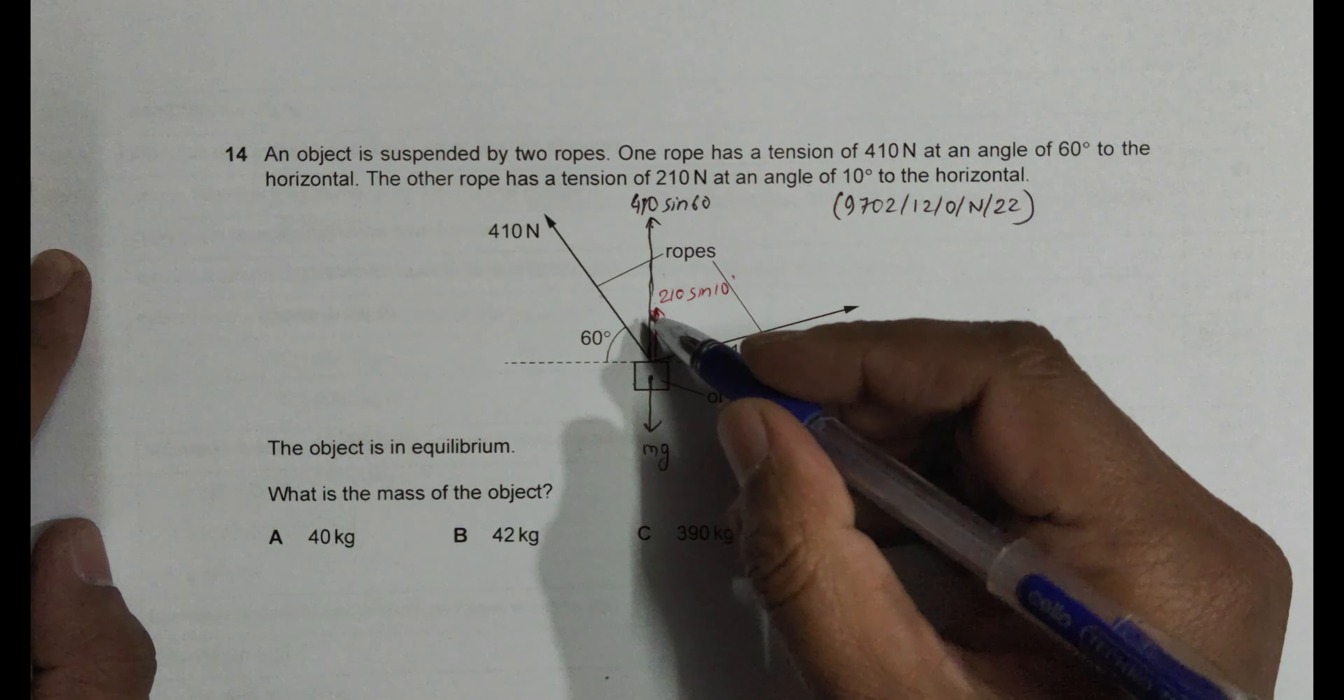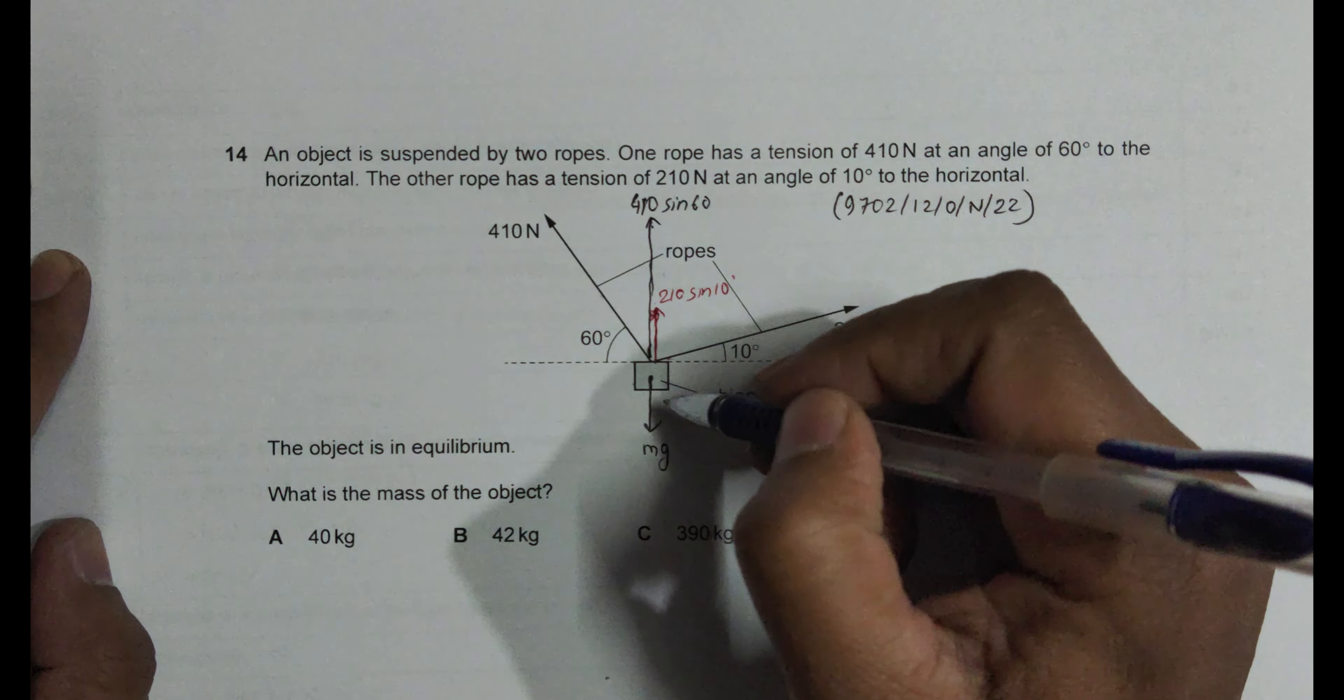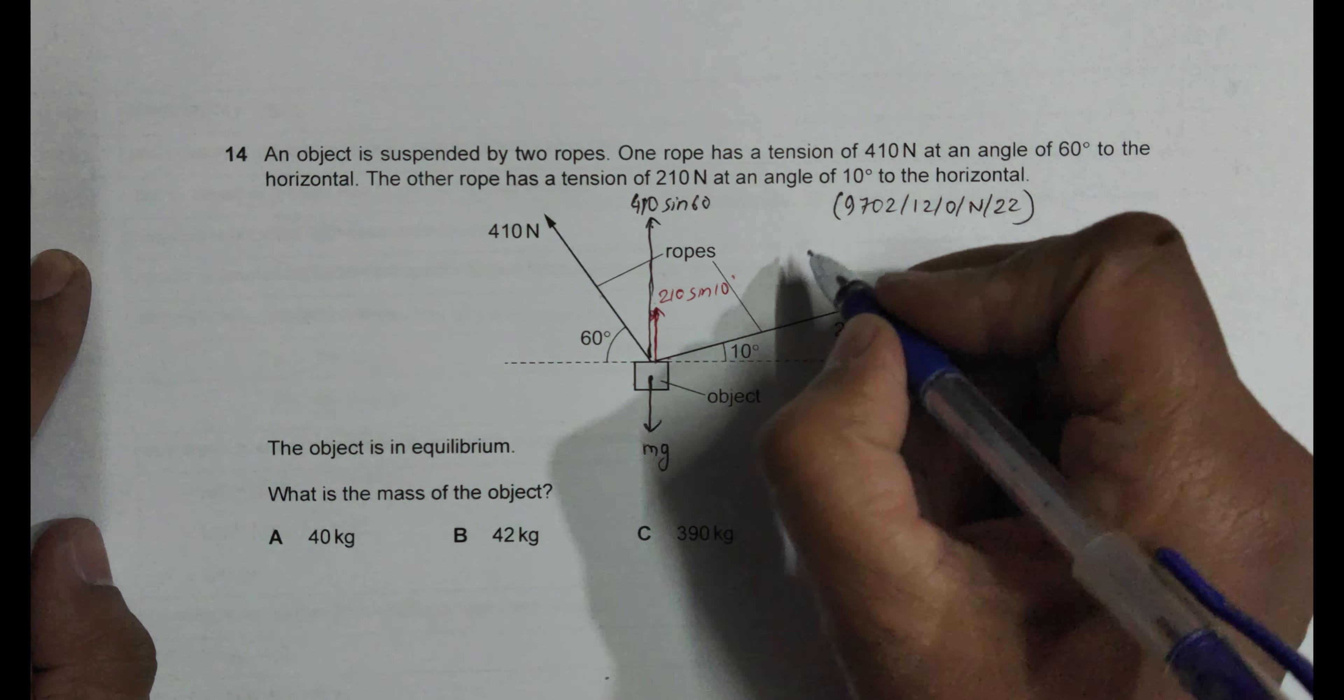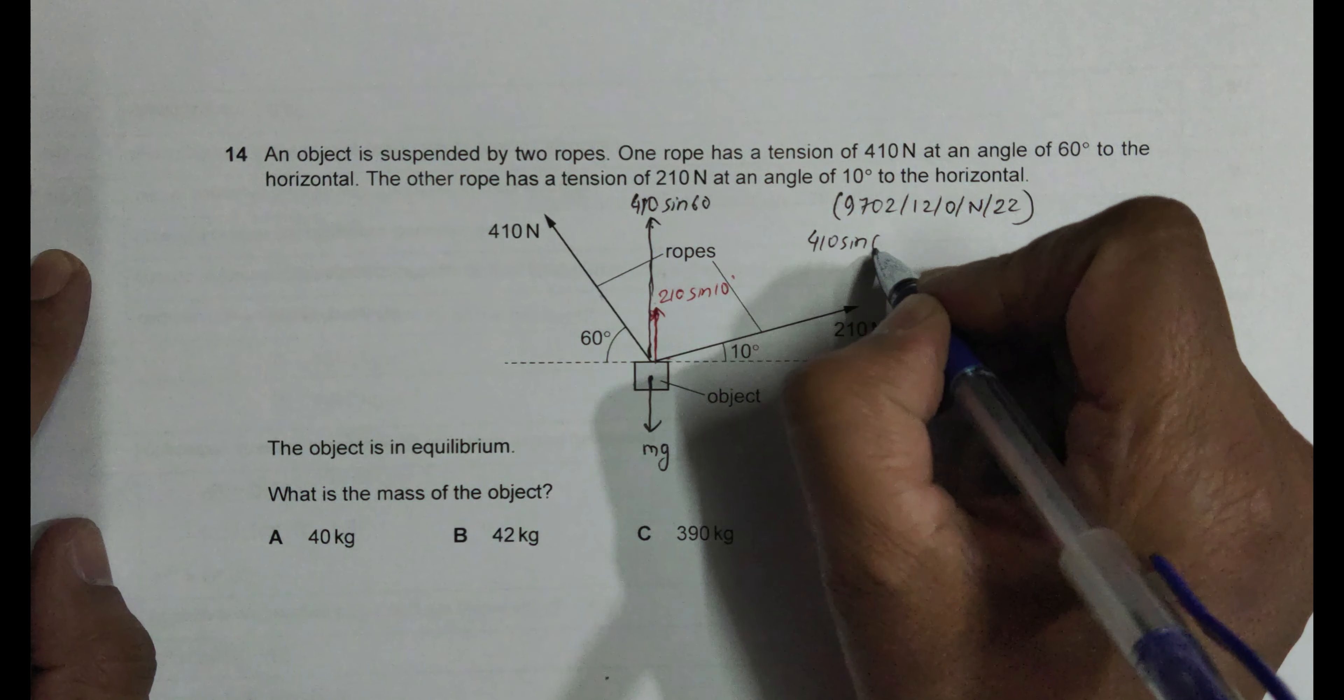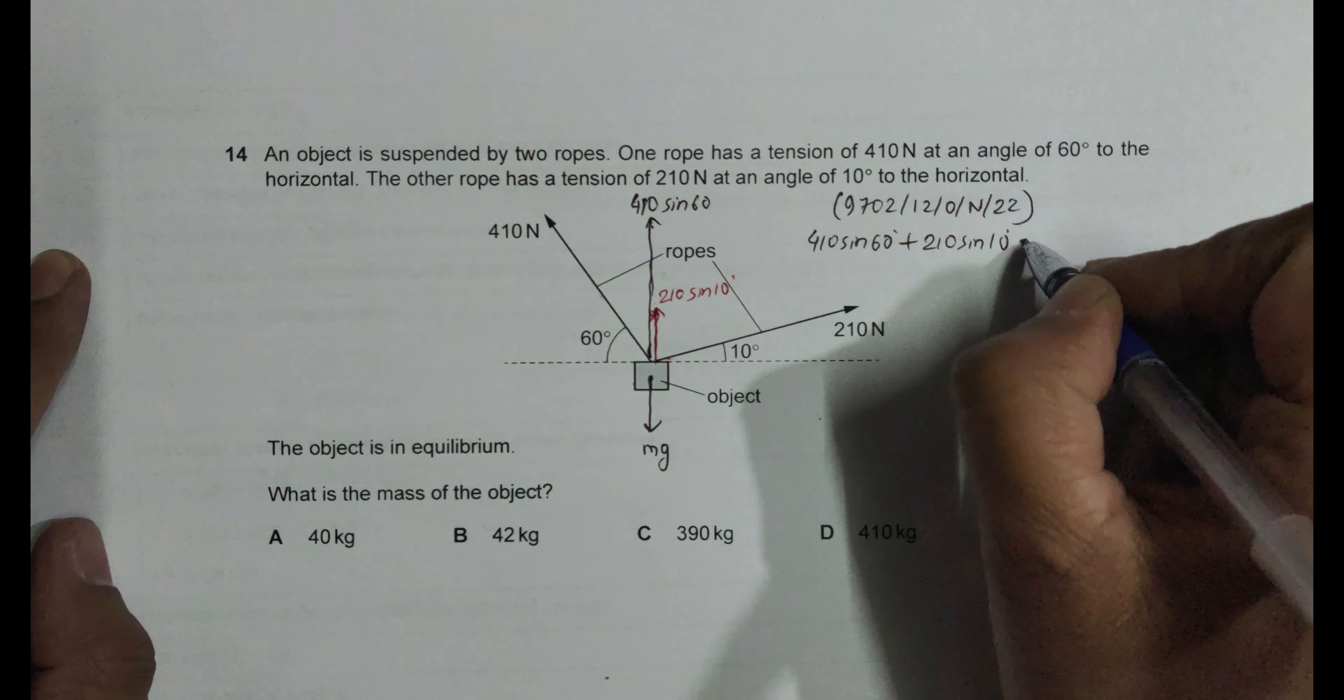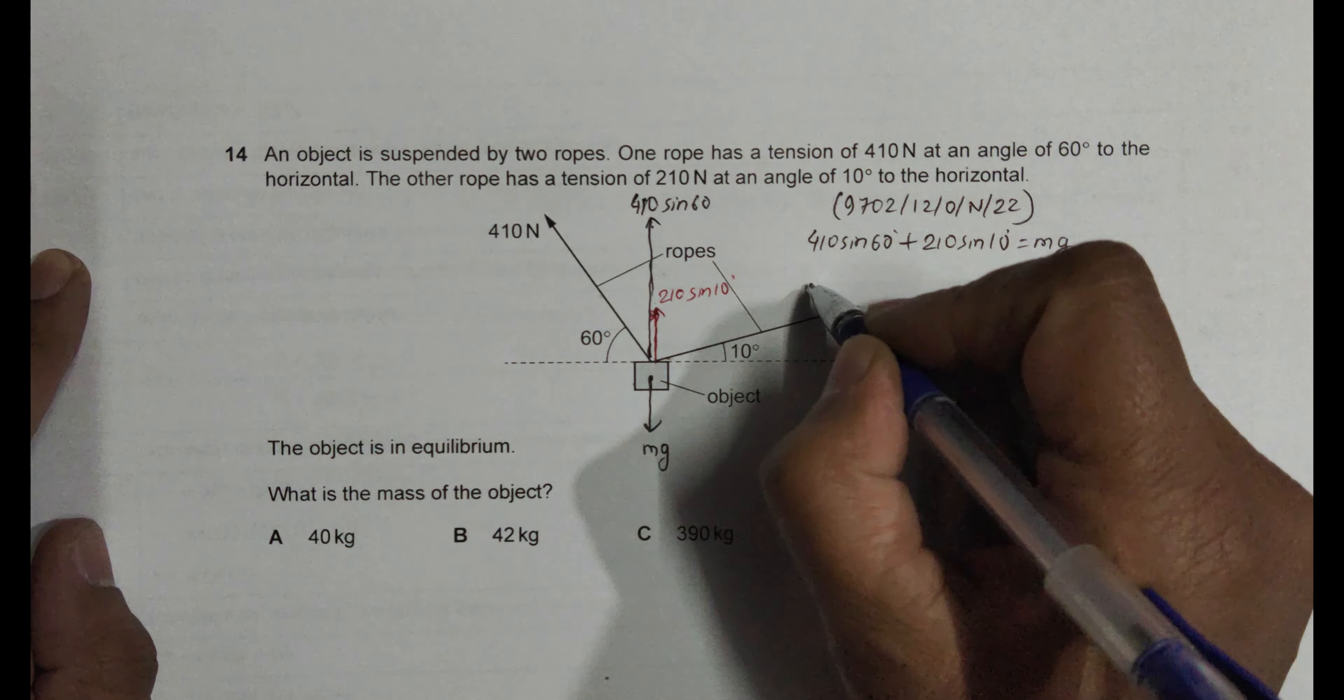So what we must have is, since the body is in equilibrium, the total upward vertical forces should be equal to the total downward vertical force. Total vertical upward should be total vertical down.